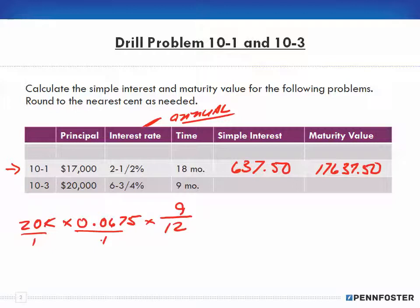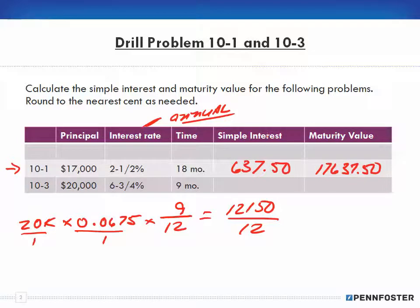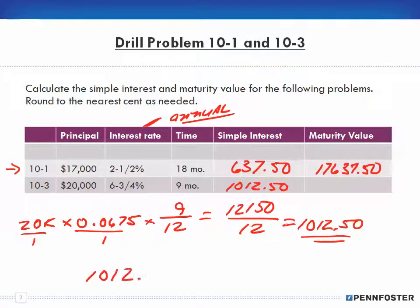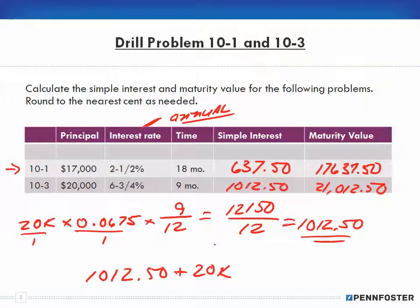Doing the math: 20,000 × 0.0675 × 9 = 12,150, divided by 12, gives us $1,012.50 in interest. To find the maturity value, we take that interest of $1,012.50 and add it to the $20,000 principal, giving us $21,012.50 as our maturity value.